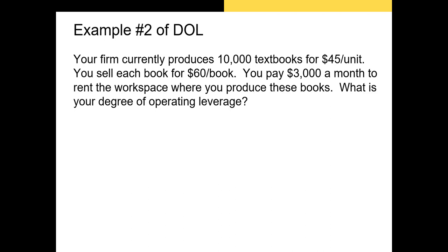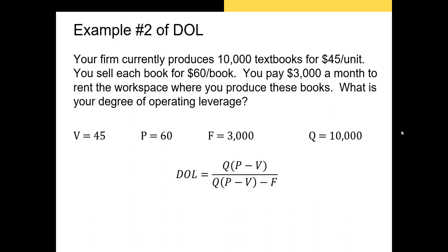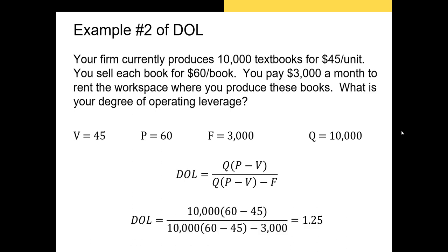Let's look at another example. Your firm currently produces 10,000 textbooks at a variable cost of $45 per unit, you sell each book for $60, and you pay $3,000 a month to rent the workspace. What is your degree of operating leverage? We know: variable cost V = $45, price = $60, fixed costs = $3,000, and quantity = 10,000. Plugging into the formula: 10,000 × ($60 − $45) divided by [10,000 × ($60 − $45) − $3,000] gives us a DOL of 1.25.